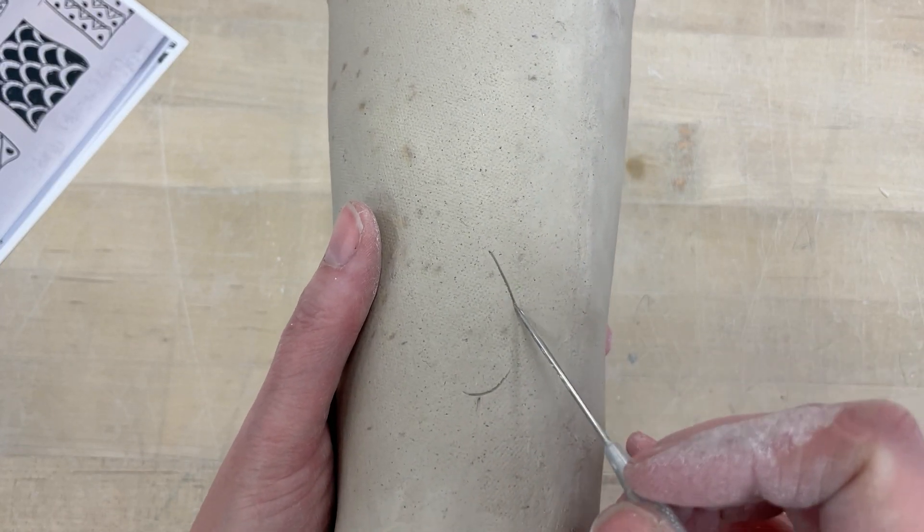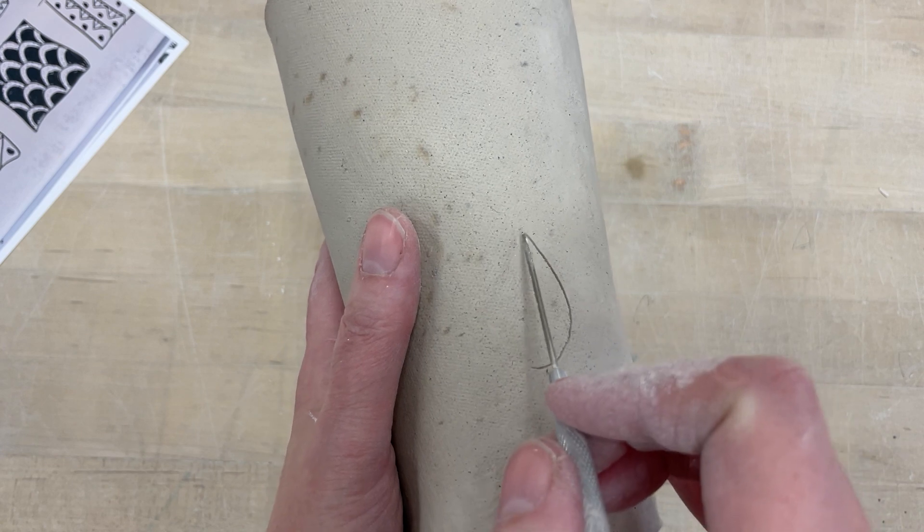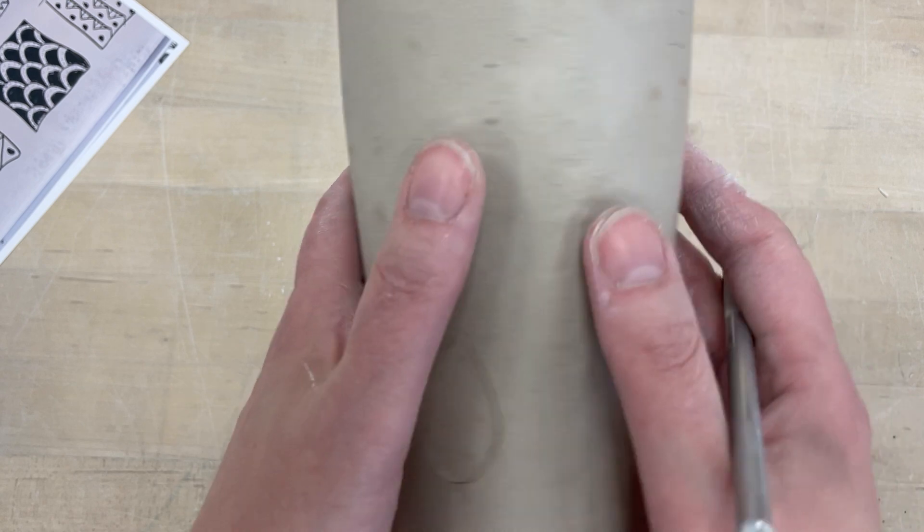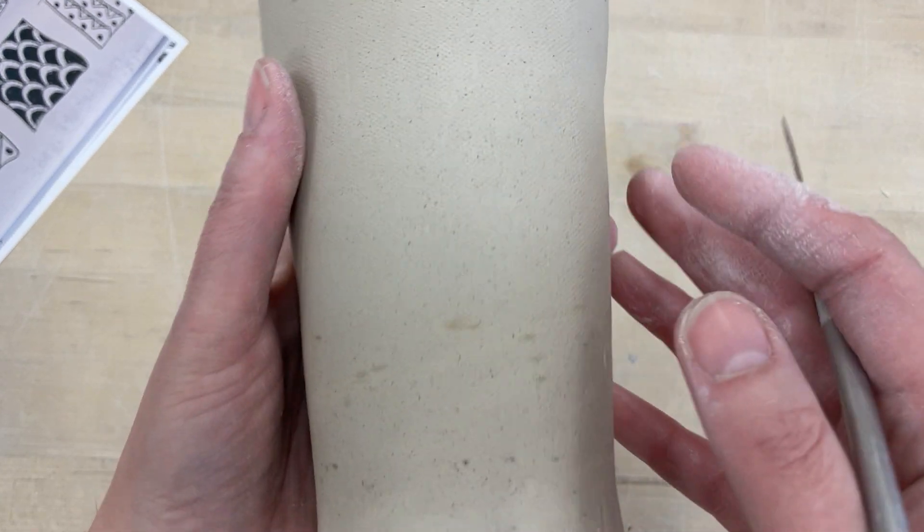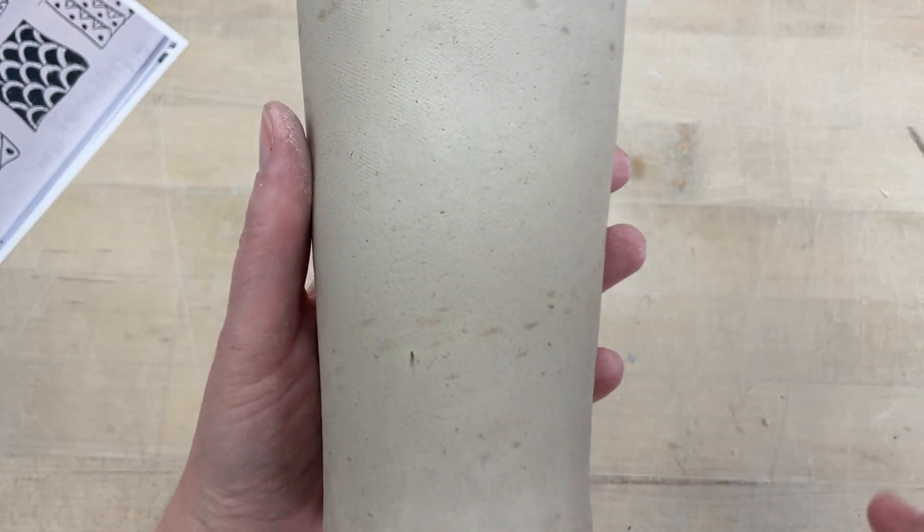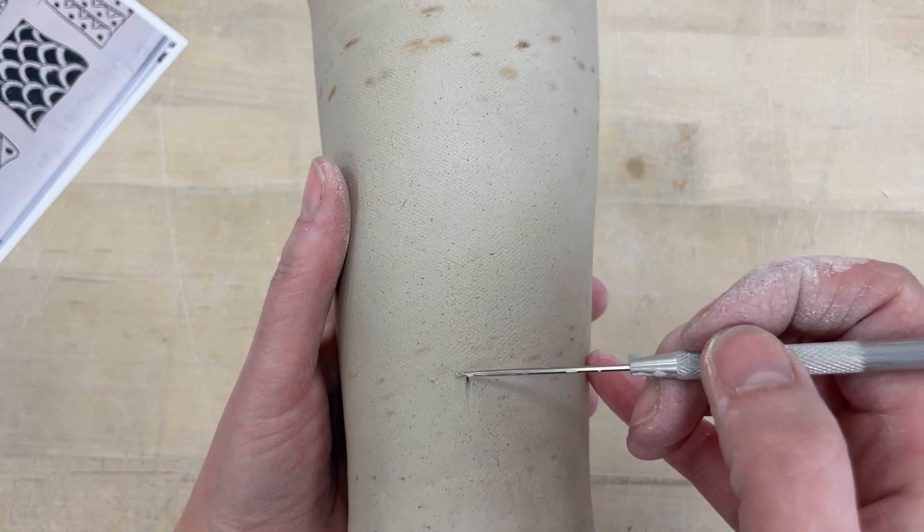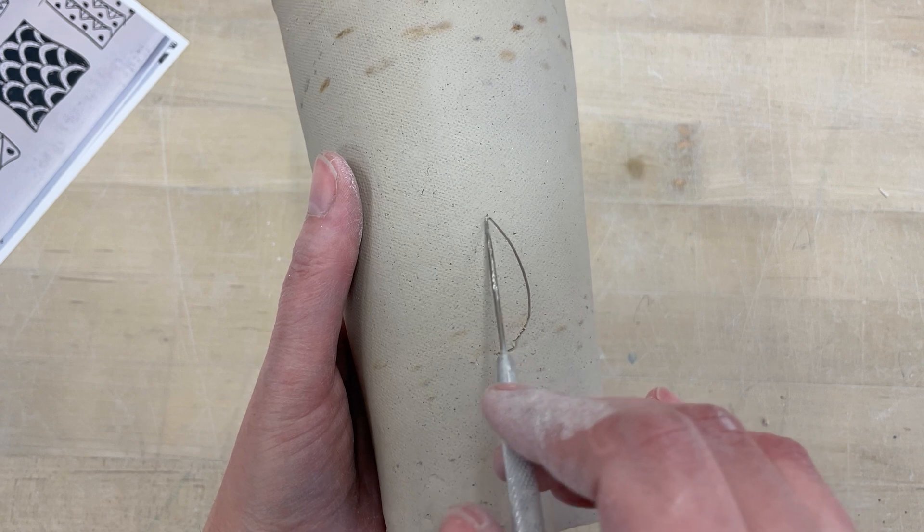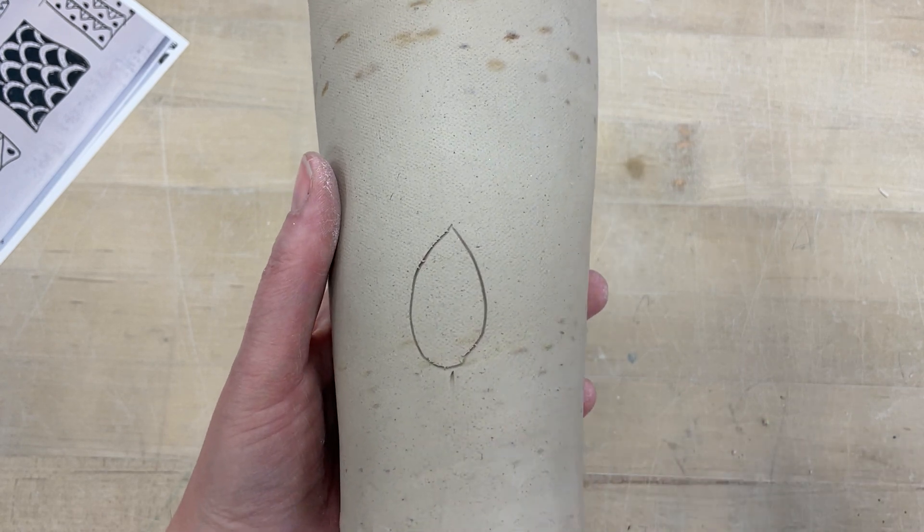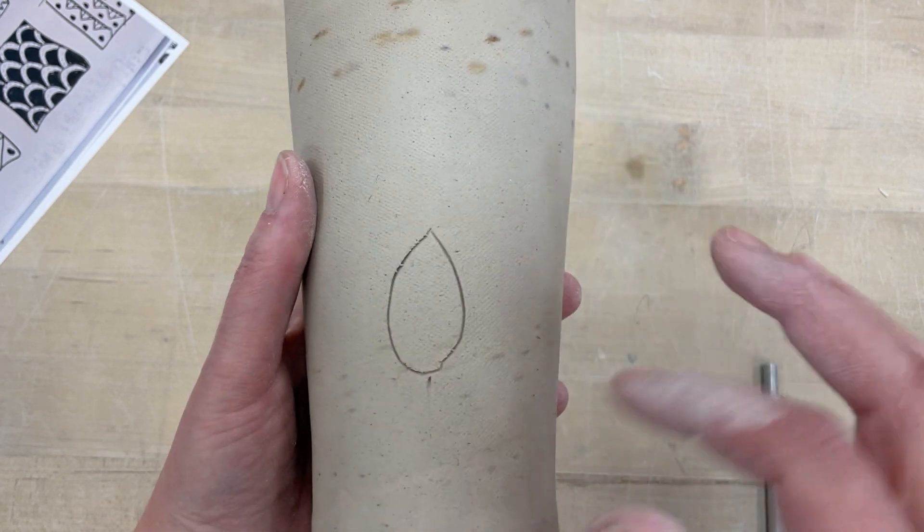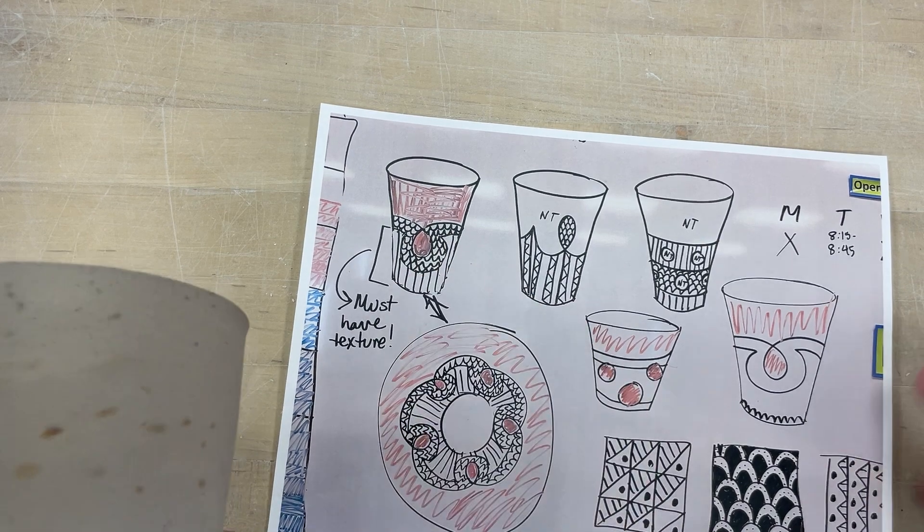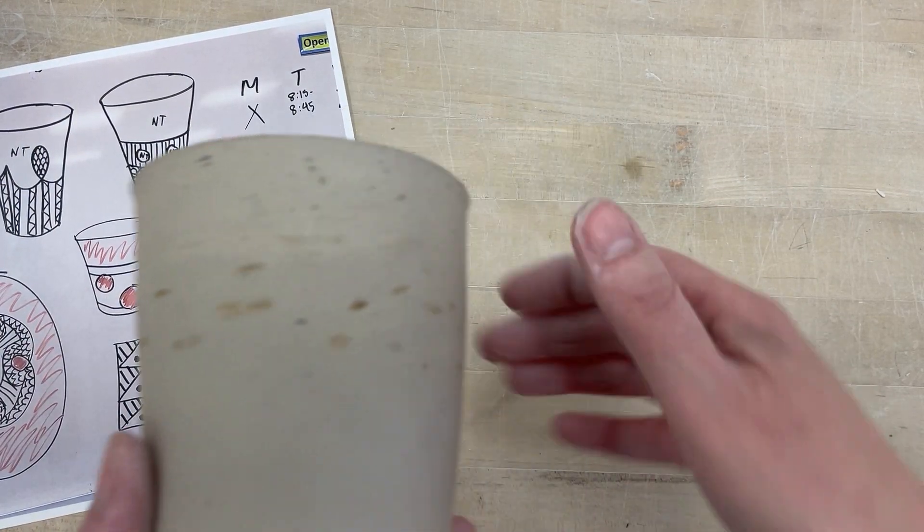So when I start deciding what I want stuff to look like, ultimately I want to trace it out really lightly with my needle tool. Let's see, there's my other mark. So I want to trace it out really, really lightly with my needle tool and make sure that everything looks right before I move to the next step. So I would do this on all three sides. And then for this pattern, there's a little extra bit on here, right?